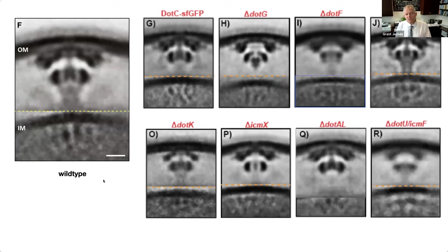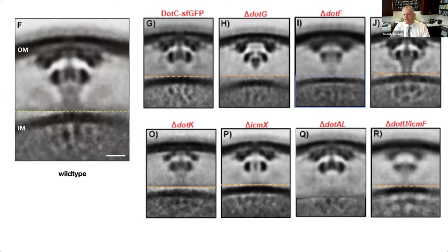The next step was to look at mutants where one protein was knocked out or tagged with a fluorescent protein to see where density would be missing or where new density would appear. We imaged many different mutants - here's a montage of eight. For instance, if you knock out the protein dot G, a heart-shaped density in the middle appears to have dropped. If you fuse superfolder GFP to dot F, you see a lot more structure and the channel becomes much clearer - this GFP fusion seems to stabilize the machine.